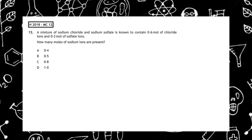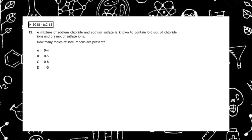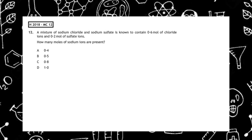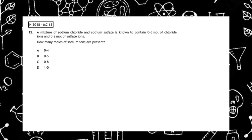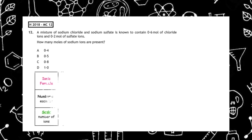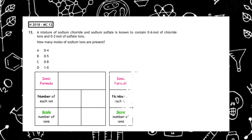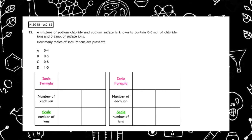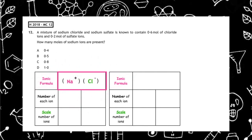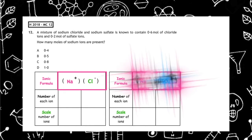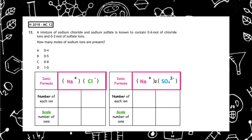This past paper question is from the Higher 2018 multiple choice question 12. A mixture of sodium chloride and sodium sulfate is known to contain 0.6 moles of chloride ions and 0.2 moles of sulfate ions. How many moles of sodium ions are present? We first write the ionic formula for each substance: sodium chloride is Na⁺, Cl⁻; sodium sulfate is (Na⁺)₂(SO₄²⁻).